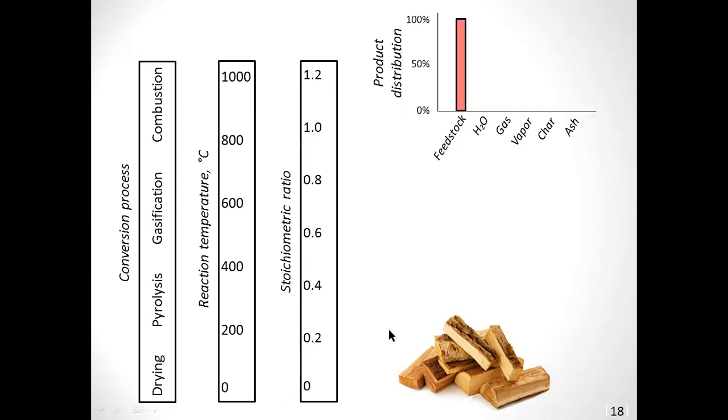But it's basically an indication of, do we have enough oxygen to fully combust? So, a stoichiometric ratio of one means theoretically you have enough oxygen present that you should be able to fully combust your fuel all the way to CO2 or CO2 and water vapor. Those very simple products from oxidation. Okay. So, let's just see what happens to our pile of wood as we start to heat it up. So, the first step, we start to dry it out.